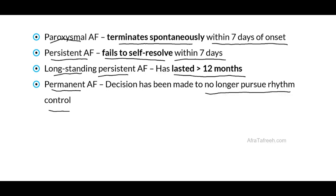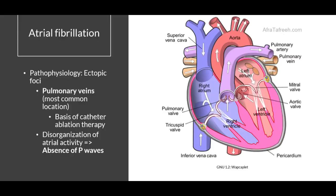We'll see examples of rhythm control later on in this module, for example cardiac ablation therapy. However, once we have a patient with permanent atrial fibrillation, we have essentially determined that these measures are no longer going to be effective, and that this patient will have this rhythm permanently.